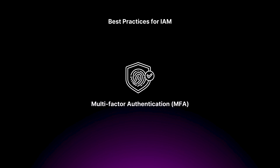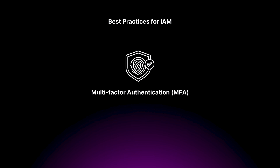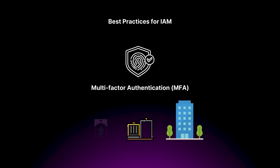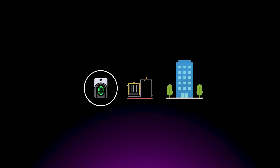So what are the best practices for identity and access management? First and foremost, you need to implement multi-factor authentication. MFA is like having a second form of verification to enter the building — it's not enough to just have the key card, which can be lost or stolen. You need another factor, like biometric scanning or a code sent to your phone, to prove you are exactly who you say you are.